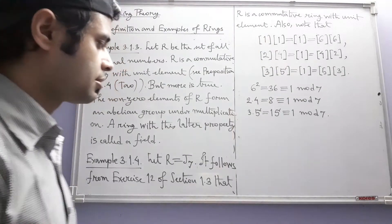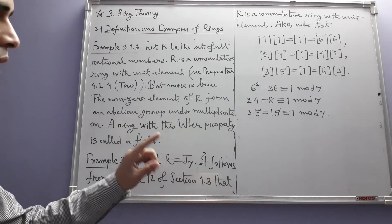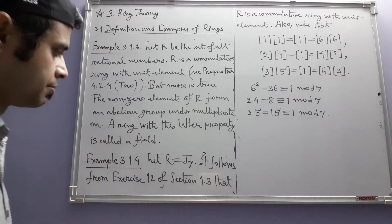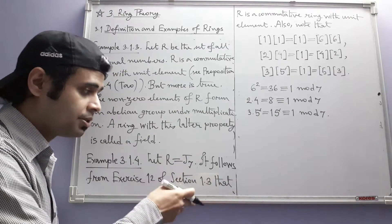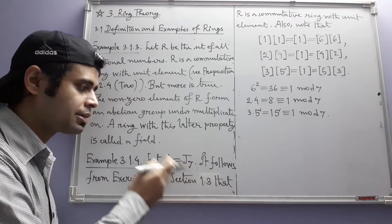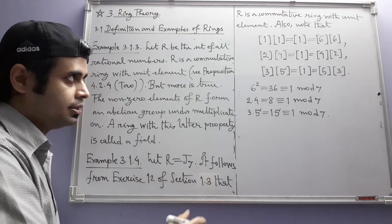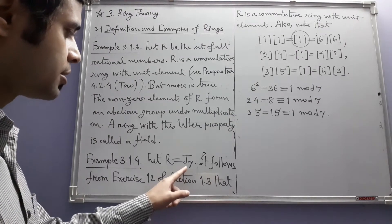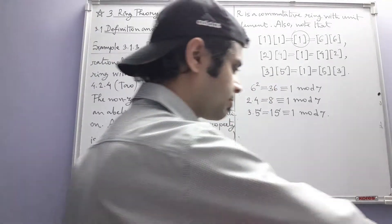So we can see that the non-zero elements in J7 form an abelian group with respect to multiplication. What do we need for that? J7 should be closed with respect to multiplication modulo 7, which actually that is the multiplication. That is true. Multiplication should be associative, that is also true. There should be a multiplicative identity, which in this case is this congruence class containing 1. And each non-zero element should have a multiplicative inverse that we have shown here itself.